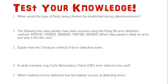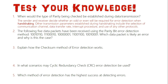Let's start going through the answers. Question 1: When would the type of parity be checked when establishing data transmission? Basically, the sender and receiver decide whether odd or even parity will be required during handshaking. Handshaking is done at the beginning of data transmission and sets a variety of parameters, including what communication channels will be used, the transfer rate, the interrupt procedure, and the use of any other protocols.